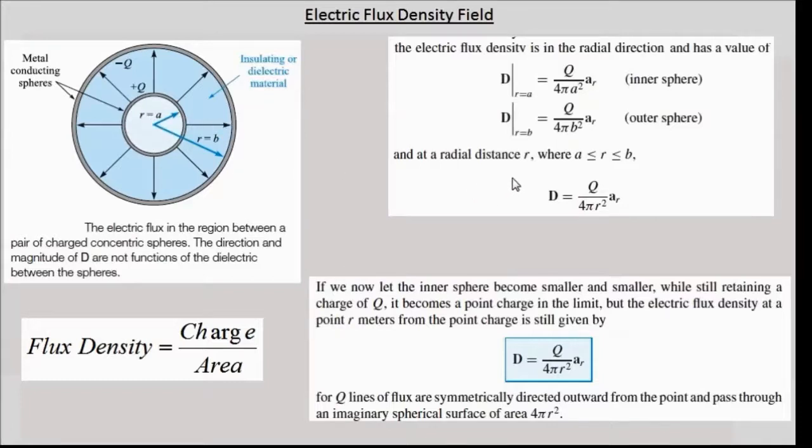At any distance r between a and b, it has the value q over 4 pi r squared along a r, radial direction a r.